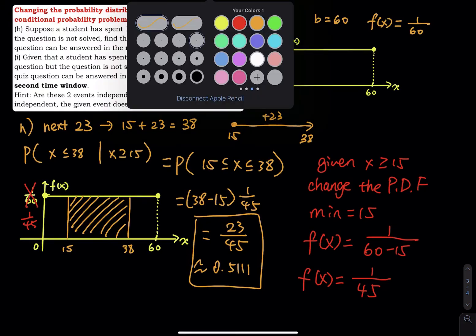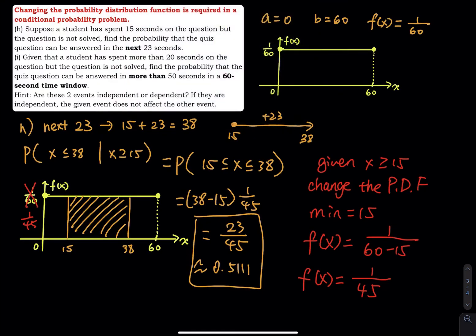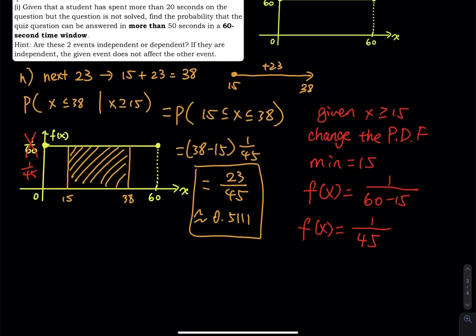So greater than 50. So we use another color for that. So part i is probability that given, given what? Given more than 20. So X greater than 20 and then 5 more than 50. So X greater than 50.